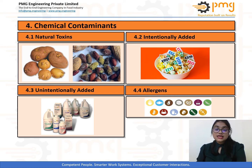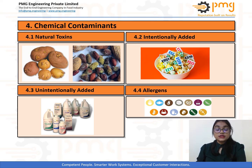The last category includes food allergens — substances in food that can cause a dangerous reaction in people who are allergic to certain food groups. Examples include peanuts, fish, and dairy products.